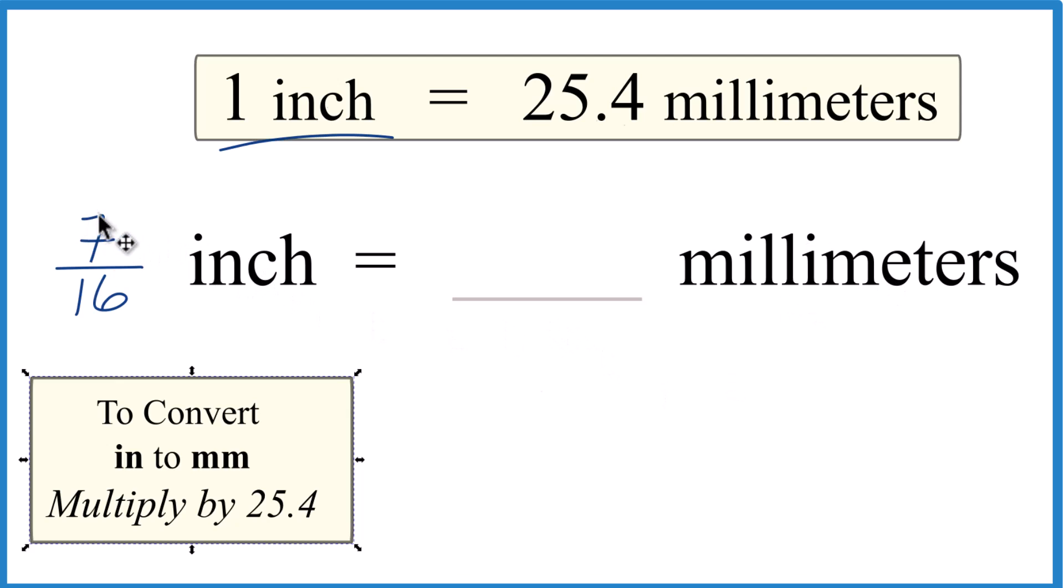Probably easier to divide 7 by 16 on a calculator and then multiply it by 25.4. So when I divide 7 by 16, I get 0.4375 inches. Now I'm going to multiply that by the 25.4, and that's 25.4 millimeters in the one inch. So that's our conversion factor there.